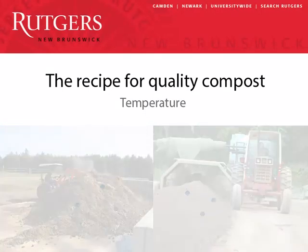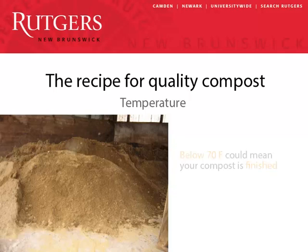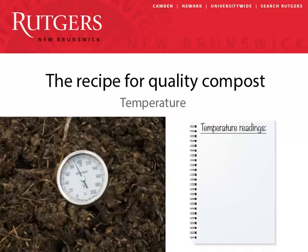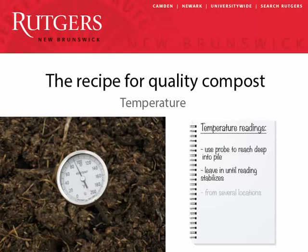Once your compost pile settles below 70 degrees Fahrenheit, it's probably close to done. If turning the pile does not raise the temperature, your compost is a finished product. To take the temperature of your pile, use a probe that reaches deep into the pile and leave it in long enough for the reading to stabilize. Take readings from several locations at various depths from both the top and the sides.